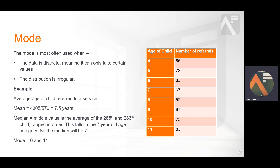So let's look at an example. Say we want to find the average age at which a child is referred to a service. The table on the right shows the frequency of each age for last year's referrals. There were 570 referrals. The mean is calculated by adding up all the ages and dividing by 570, which gives us 7.5 years, falling into the 7 year old age bracket.